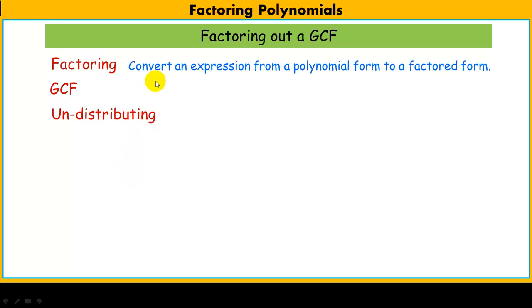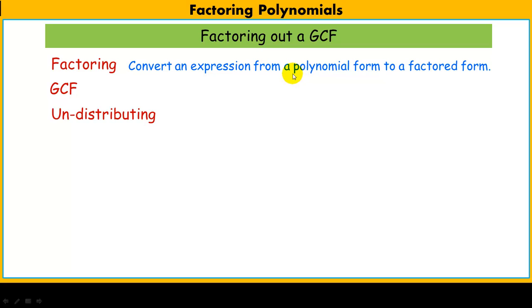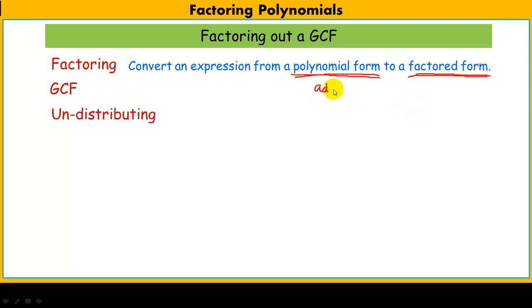Our objective today in factoring is to convert an expression from a polynomial form into a factored form. A polynomial form is basically an addition problem — a sum of monomial terms. A factored form means two or more things that are being multiplied. So it's going from an addition problem to a multiplication problem.